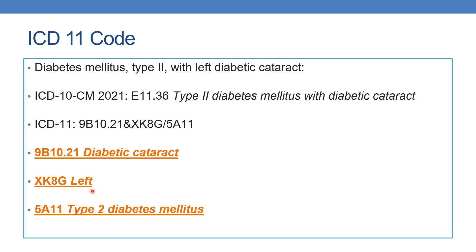XK8G indicates left side, followed by 5A11 which indicates type 2 diabetes mellitus. So the complete diagnostic sentence is: 9B10.21 (diabetic cataract), ampersand XK8G (left side), forward slash 5A11.11 (type 2 diabetes mellitus). For comparison, the ICD-10 code 11.36 indicates type 2 diabetes mellitus with diabetic cataract, whereas the ICD-11 code is 9B10.21 & XK8G / 5A11.